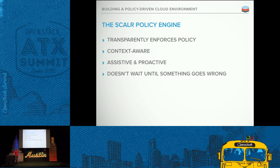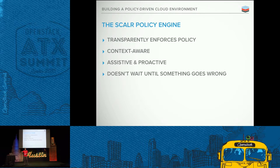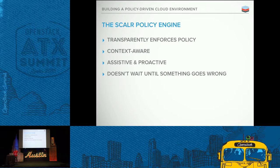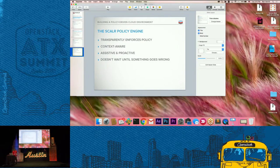So the Scalar policy engine transparently enforces that policy. It's context-aware — it doesn't wait until you did something wrong and then you have to fix that. It helps you avoid that wrong choice or eliminates it completely. That's what I mean by assistive or proactive.